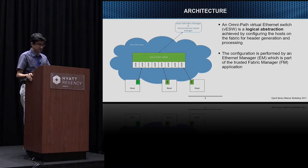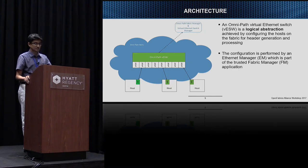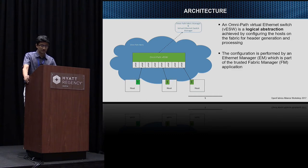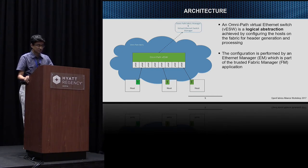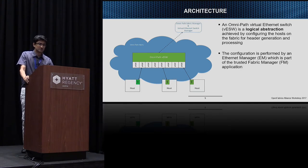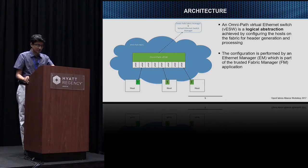Here is a diagram which depicts the architecture at a very high level. In the middle is an Omnipath Virtual Ethernet switch, which is a logical abstraction achieved by configuring the host on the fabric for header generation and processing. On the Omnipath Fabric we have a Virtual Ethernet switch with multiple virtual ports. At the bottom are a bunch of hosts on the fabric, each with a virtual NIC attached to this virtual switch. This virtual Ethernet switch is a logical abstraction achieved by configuring the hosts, and the configuration is done by an Ethernet manager software depicted in the top block, which is part of the trusted fabric manager application.